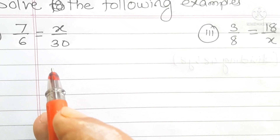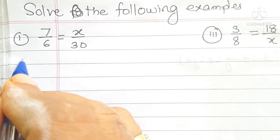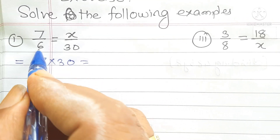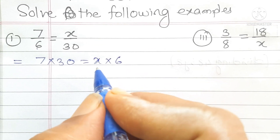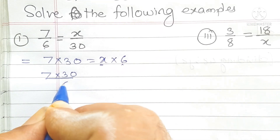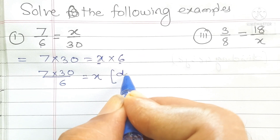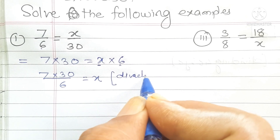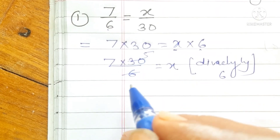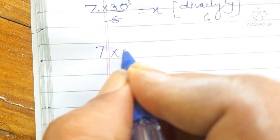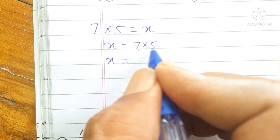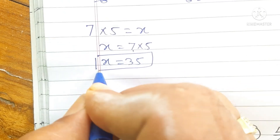Solve: 7 upon 6 is equal to x by 30. First step is cross multiplication: 7 into 30 is equal to x into 6. Find the value of x. x is equal to 7 into 30 divided by 6, which is 7 into 5, so x is equal to 35.